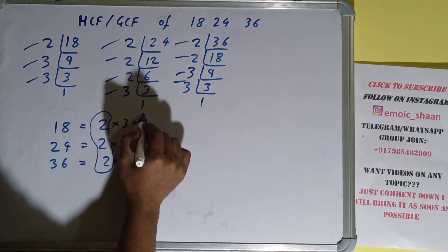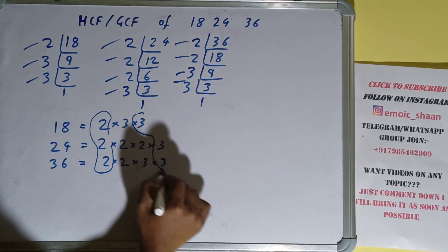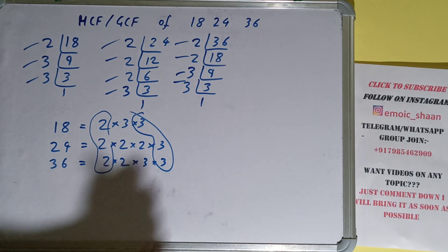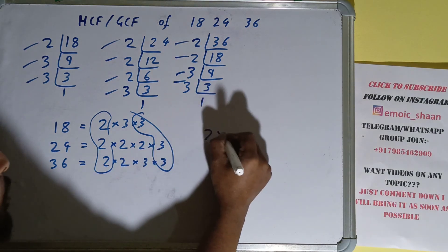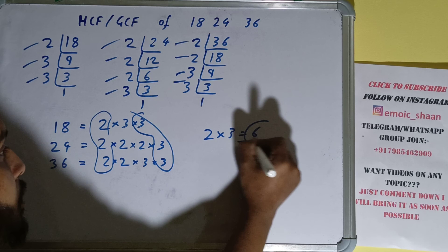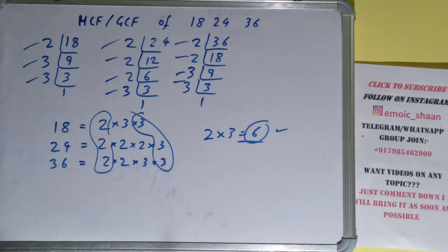We have a 2 in common and a 3 in common. Do we have anything extra in common? No. So the answer will be 2 × 3, which gives us 6. If you found the video helpful, please hit the like button, consider subscribing, and thanks for watching!